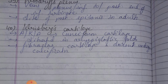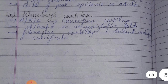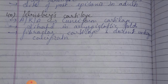Fortieth is Wrisberg cartilage — a cuneiform cartilage situated in the epiglottic fold. This is fibro-elastic cartilage and calcification does not occur in the epiglottic fold. These are the ENT nuggets.